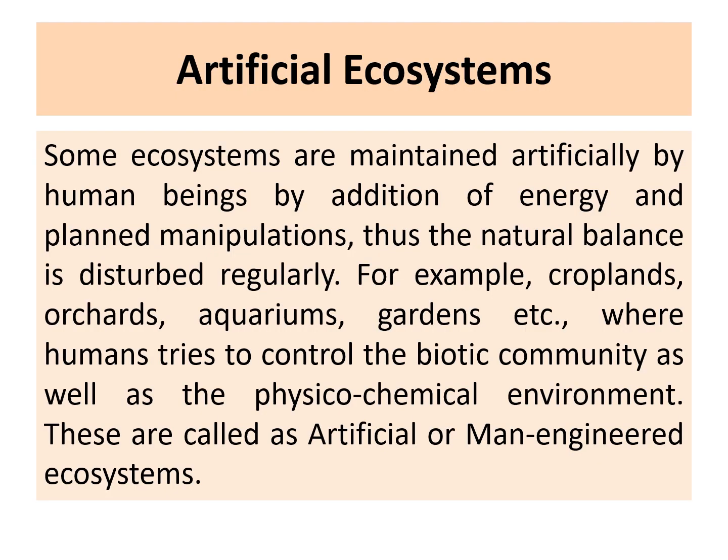There is also another type of ecosystem called artificial, or human-made, ecosystems. These are ecosystems that are maintained or made by human beings through the addition of energy and plant manipulation, thus disturbing the natural balance at regular intervals. A very good example is cropland, where human beings cultivate crops according to their requirements. Other examples include orchards, aquariums, and gardens, where we control the biotic community along with its physico-chemical environment.